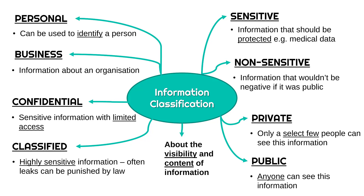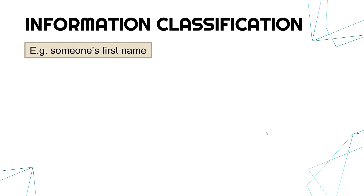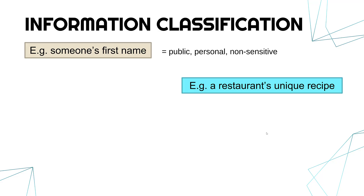Let's look at how these classifications apply to different scenarios. Take somebody's first name — first names are usually public, as we tell people our first names and may have them on social media. They are personal, since you can identify somebody based on their first name combined with other information. But crucially, first names are non-sensitive — you don't really have to be particularly careful with someone's first name, as on its own it may not identify an individual.